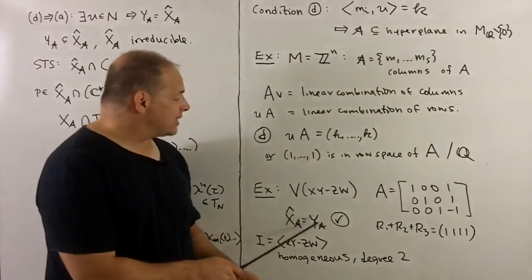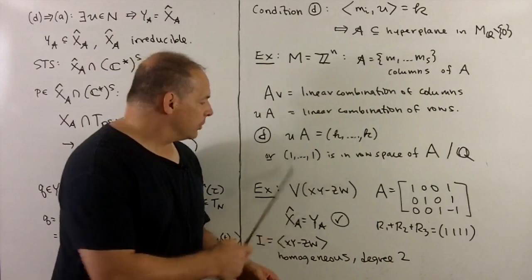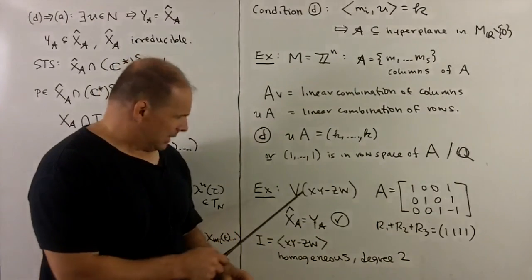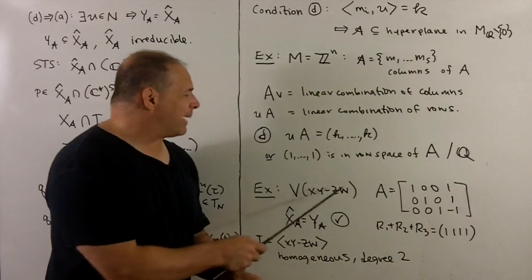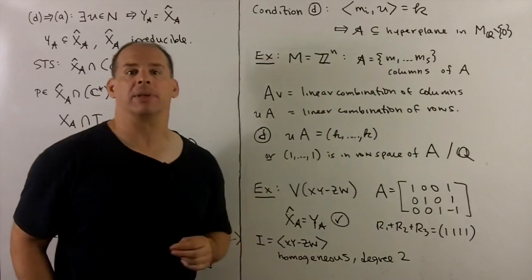That means y sub a is equal to the cone over x sub a. We also have that the ideal, the toric ideal, is homogeneous. And we see that the ideal is just generated by a single element, xy minus zw, and that's homogeneous of degree 2, as promised.